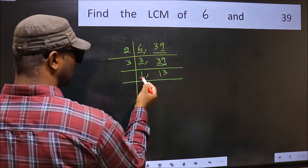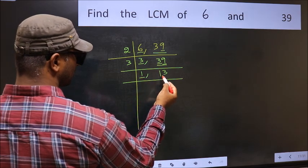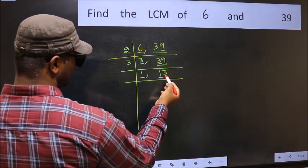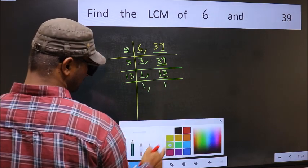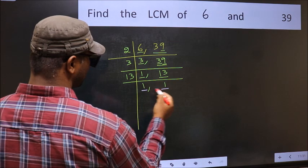Now we got 1 here, so focus on the next number 13. 13 is a prime number, so 13 times 1 is 13. So we got 1 in both the places.